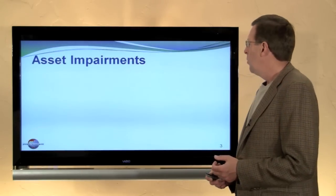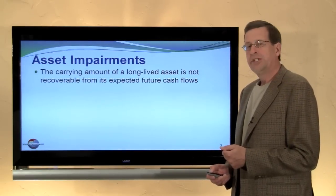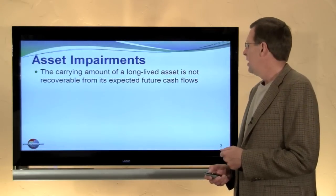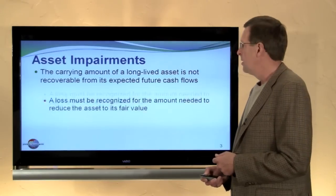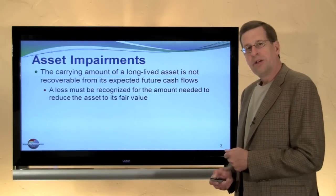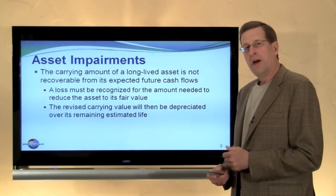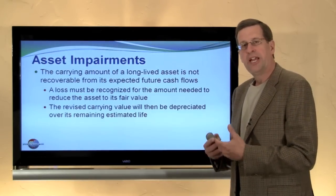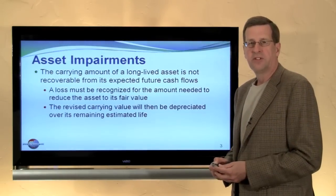What is an asset impairment? An asset impairment generally is regarded as a situation where the carrying amount of a long-lived asset, such as property, plant, and equipment, is not recoverable from its expected future cash flows. In those cases, a loss must be recognized for the amount necessary to reduce the asset to its fair value. The revised carrying amount establishes a new accounting basis that will then be depreciated going forward. So it is a revaluation of an asset downward to reflect its fair value.